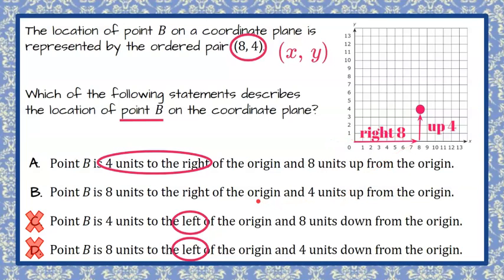And then let's just verify here. We're going to rule out A. So it is 8 units to the right of the origin and then 4 units up. And we can see it is 4 units up.